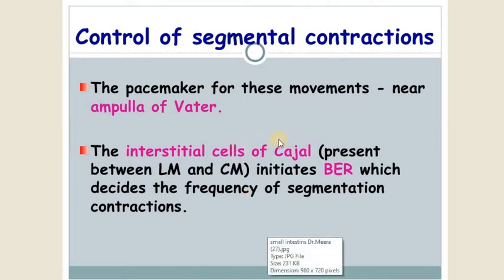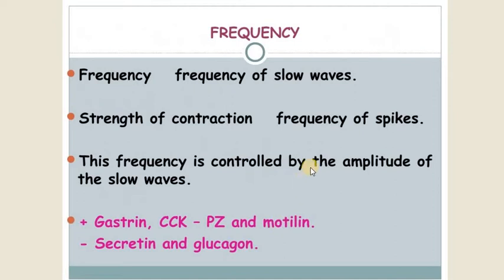The control of segmentation contractions: the pacemaker for this movement is near the ampulla of Vater. These are slow frequency waves.